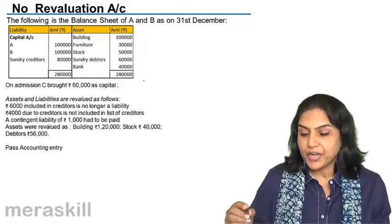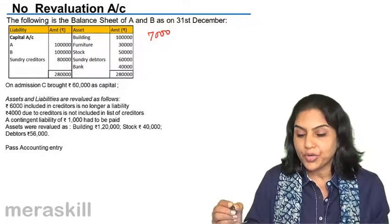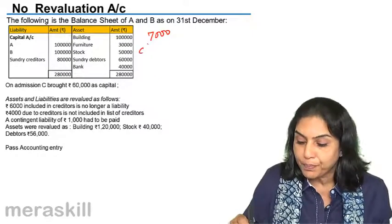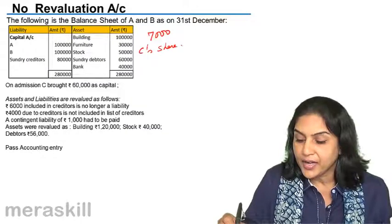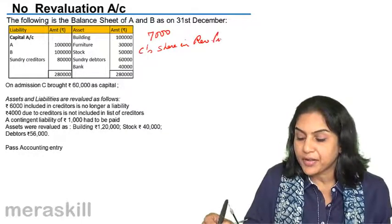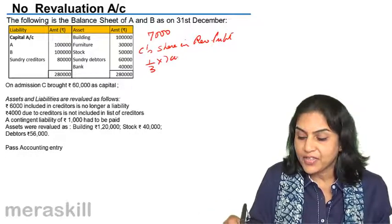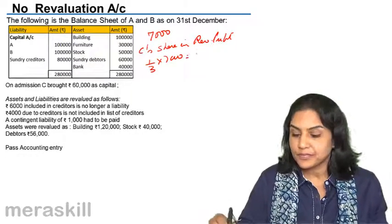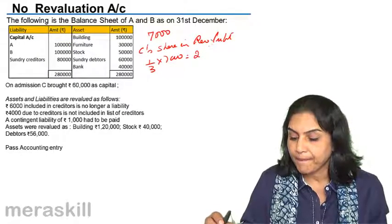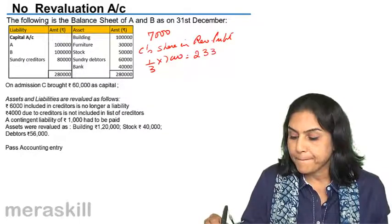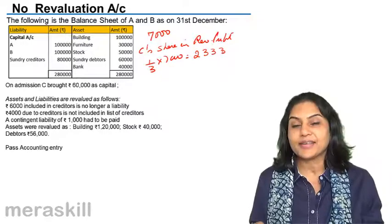We know that the profit on revaluation was 7,000. We take the new partner's share — C's share in revaluation profit. How much is that? One third of 7,000, that is, assuming it is 2,333.